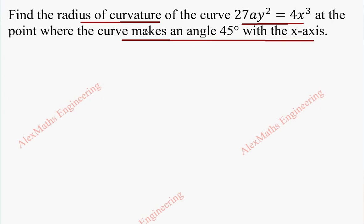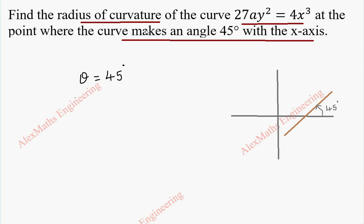When the curve makes 45° with the x-axis, its slope is tan(theta). Since theta is 45°, the slope dy/dx equals tan(45°), which is 1.